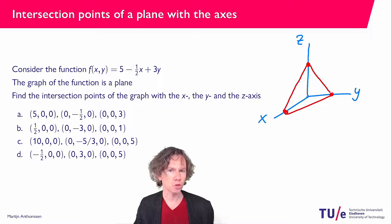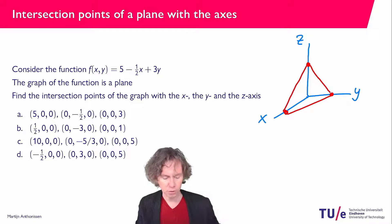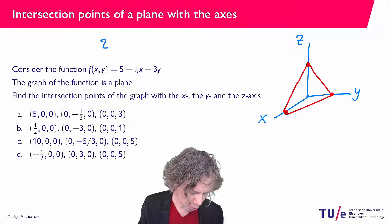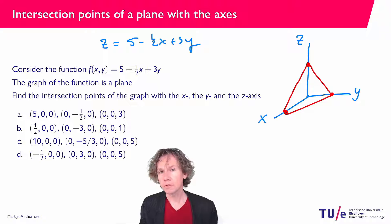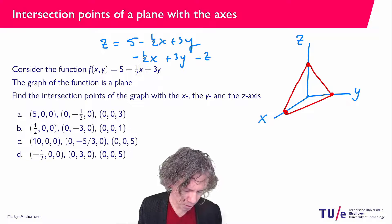It looks like I drew a triangle here, but of course the plane extends in all directions. The plane we are considering is the graph z equals five minus one-half x plus three y. That is the plane corresponding to this function, and if we rewrite it we get: minus one-half x plus three y minus z equals minus five.